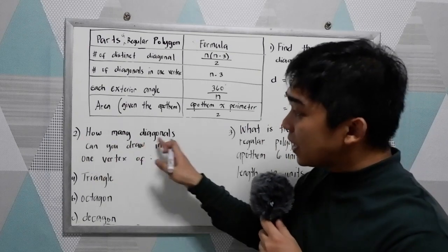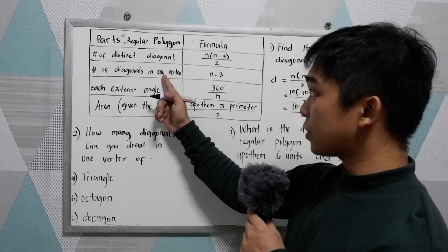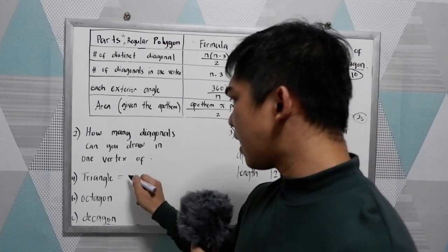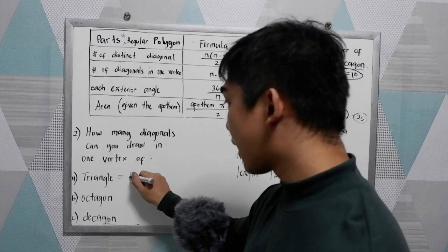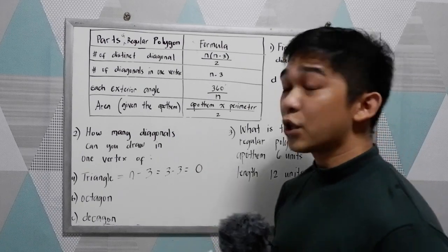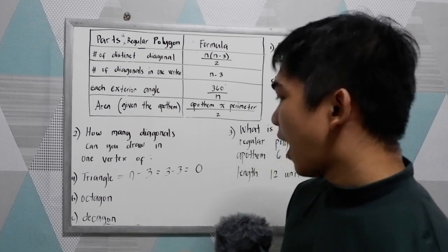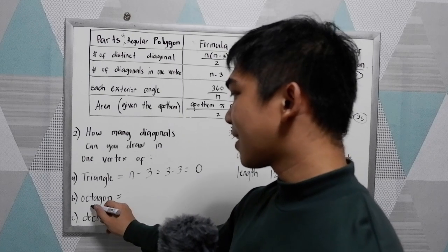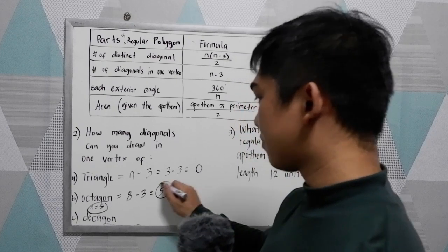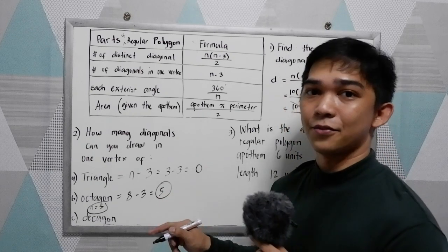Number 2: how many diagonals can you draw from one vertex? We use the formula n-3. For a triangle, which has 3 sides: n-3 = 3-3 = 0. So we have no diagonals in a triangle. For an octagon, which has 8 sides: 8-3 = 5. So from one vertex of an octagon, you can draw 5 diagonals.